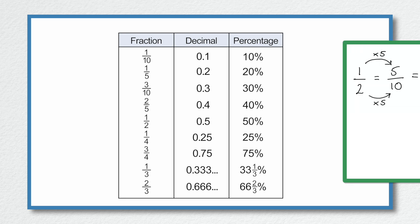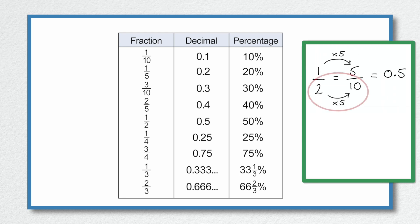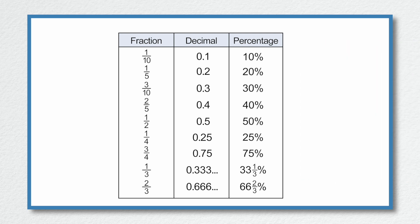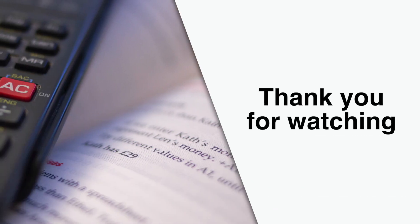For example, if I had the fraction a half and couldn't remember the decimal or percentage equivalent — if I multiply the denominator 2 by 5, I get 10, so I also multiply the numerator by 5, giving 5 tenths. 5 tenths equals 0.5, because the 5 goes in the tenths column. Similarly, multiplying the denominator by 50 gives 100, so multiplying the numerator by 50 gives 50 over 100, which I can write as 50%. That's all I'm going to cover on fractions, decimals, and percentages at this time. I hope you found the video helpful. Thank you for watching.